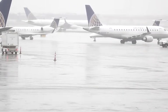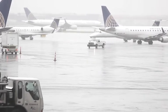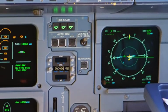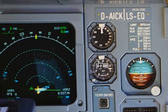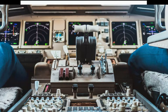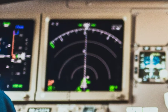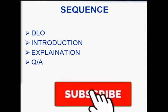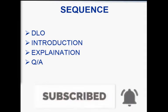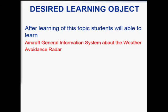Hello dear students, today we are going to start one of the most important features of the aircraft: the weather avoidance radar. Weather avoidance radar plays a very vital role in aircraft to give information to the pilot about the weather. Our learning sequence will be like this: first an introduction, then explanation, and at the end if you have any questions, please put them in our comment box.